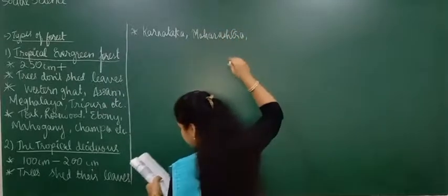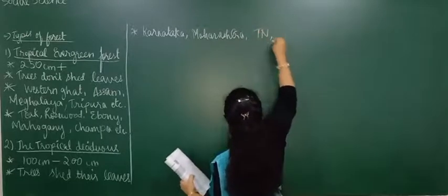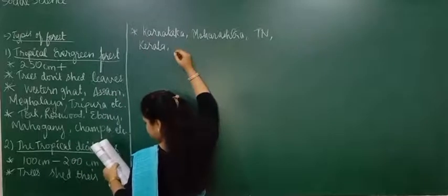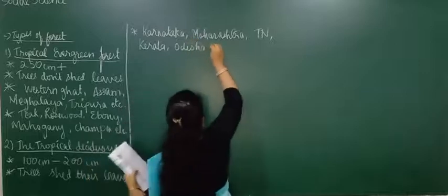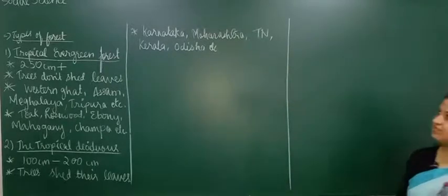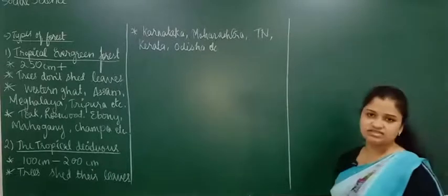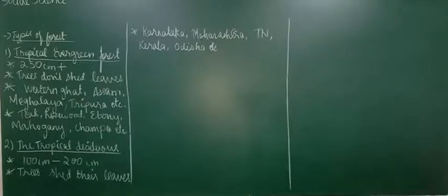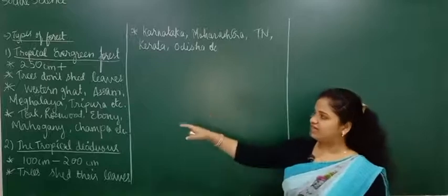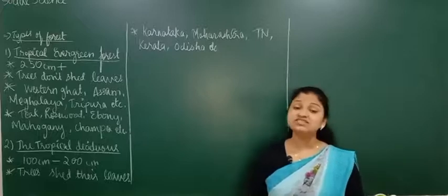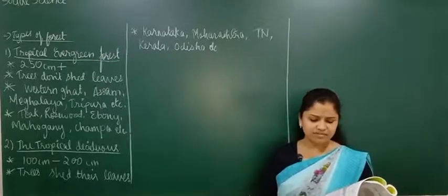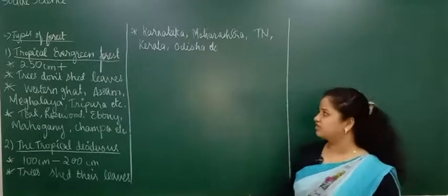The common trees found in tropical deciduous forest are teak — which is also found in evergreen forest — sal, sandalwood, kanju, mango trees, neem trees, and tamarind trees. Sandalwood is an important tree in this forest. Tamarind is what we call 'imli' in India. You can Google the names to see pictures if you're not familiar with them.